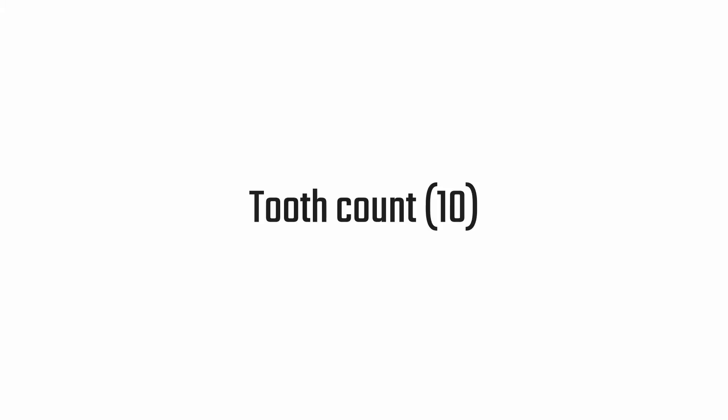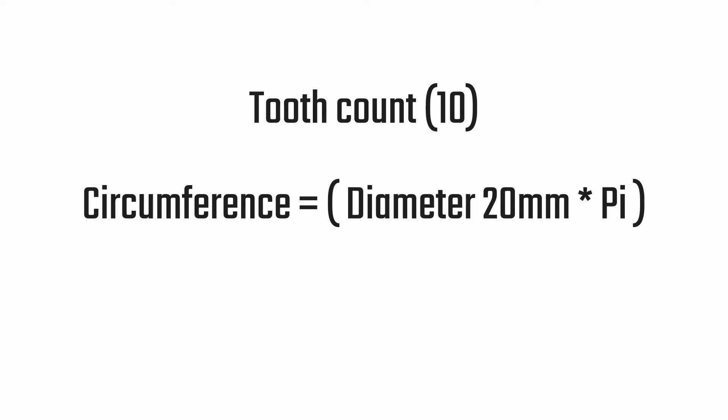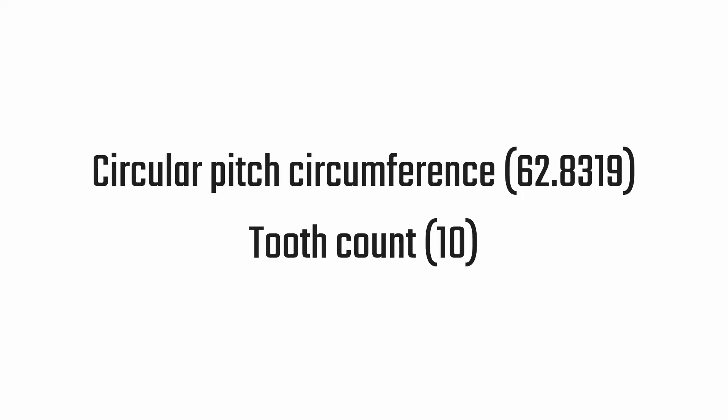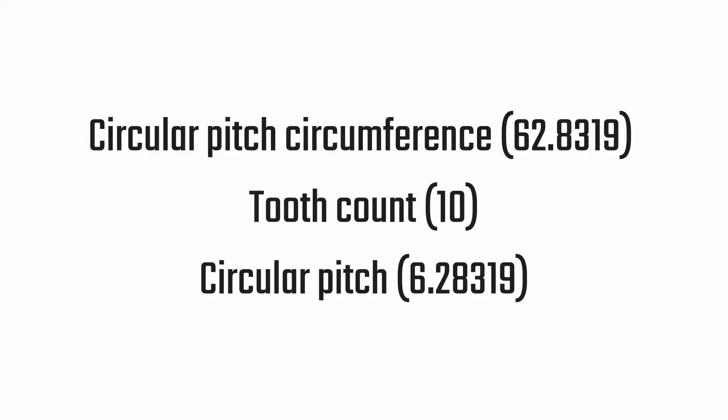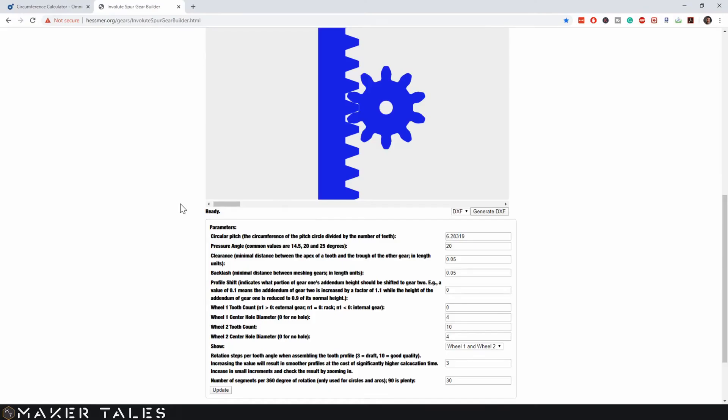So now we have two of our numbers: a tooth count of 10, and our circumference which is 20 millimeters times pi, equaling 62.8319. To set our circular pitch, it's our circumference divided by our tooth count, which comes to 6.28319. Let's add that to the generator.